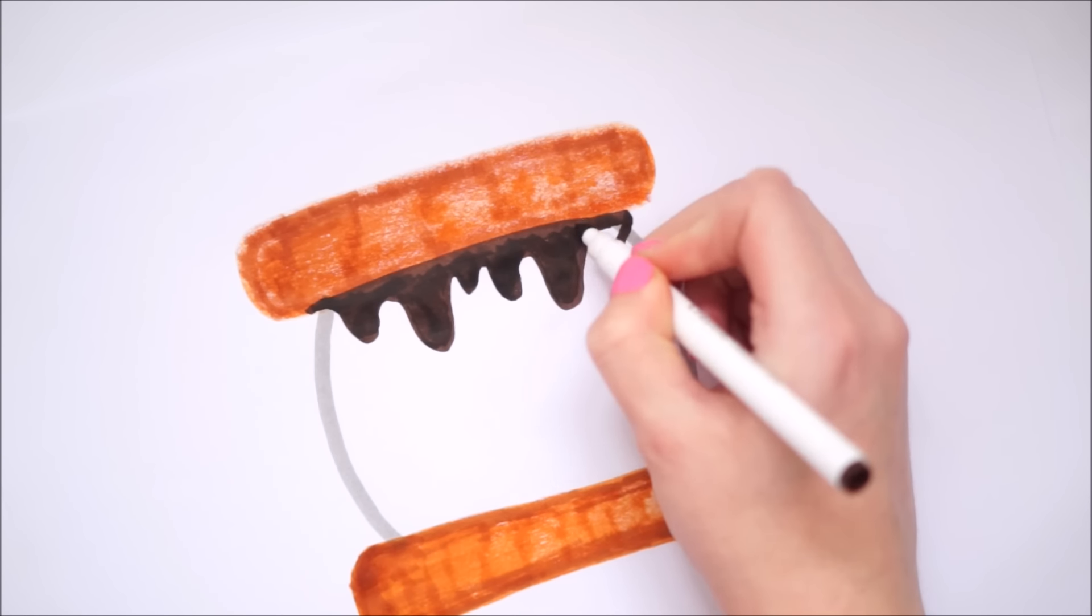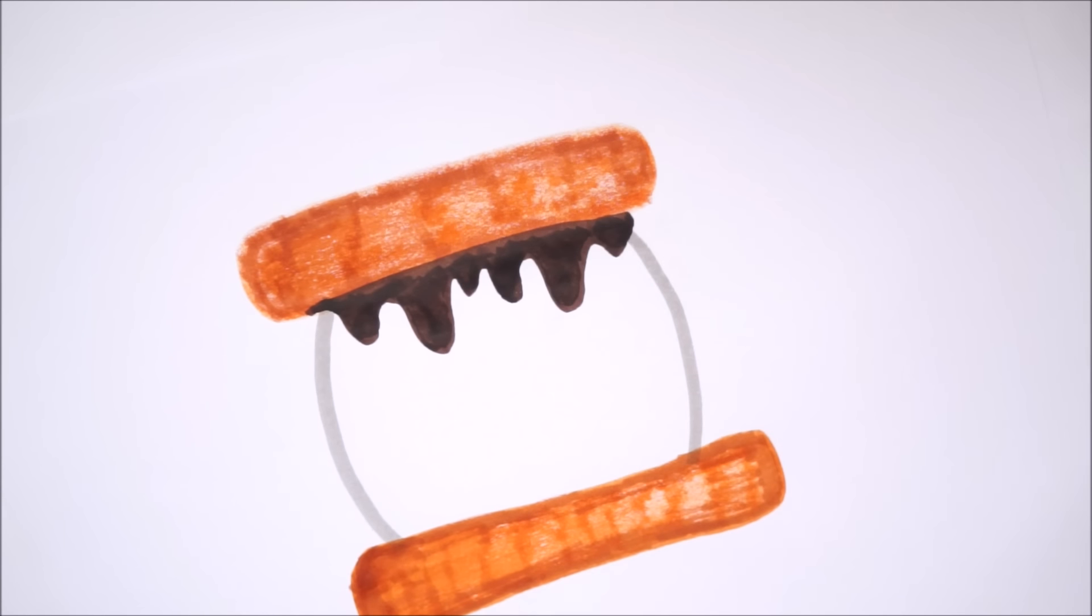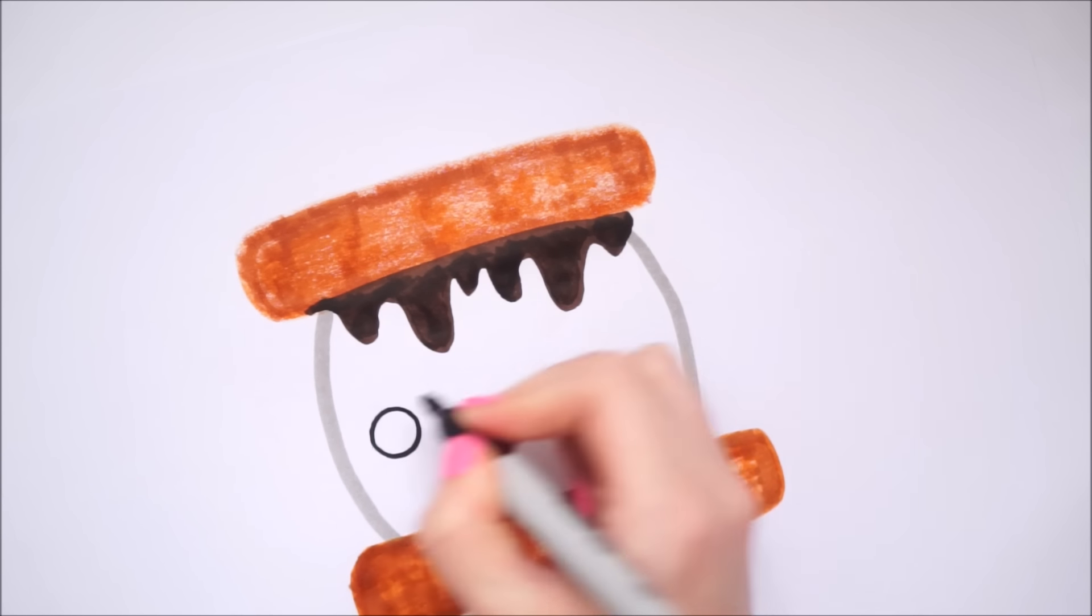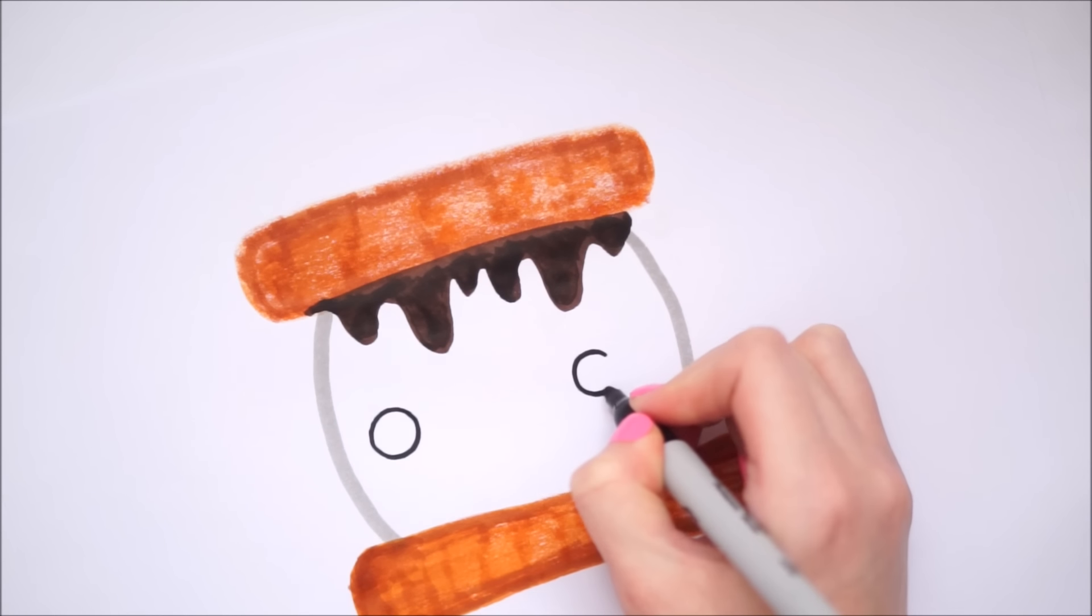Once I had completely done the little drip chocolate bit, I then moved on and popped a little face on the front. To do this I just used my black Sharpie pen to draw out the eyes and the mouth, and I colored the eyes in with this pen also.